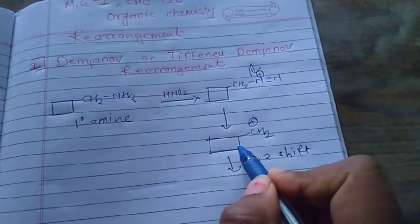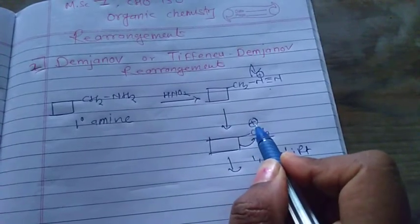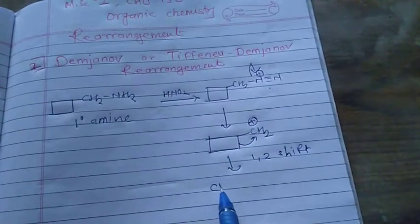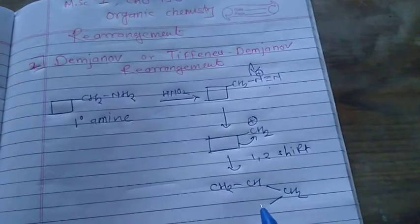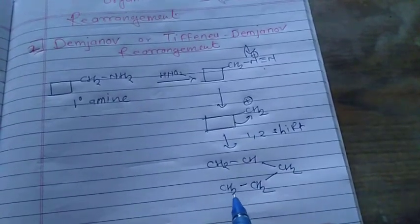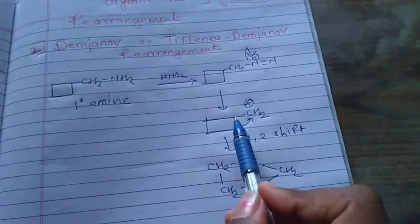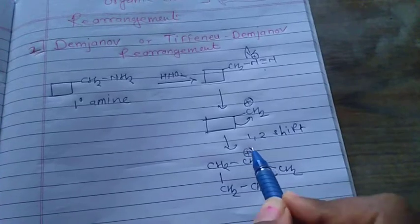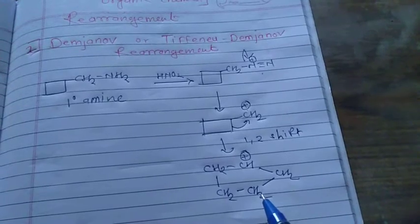The ring is expanded — this bond is shifted and the carbocation is shifted to this carbon atom, forming a structure with CH2, CH, CH2, and CH2 bonded together. The positive charge is shifted to this carbon atom because the valency of this carbon is not completed — one electron is lost, and that's why this carbon has a positive charge.